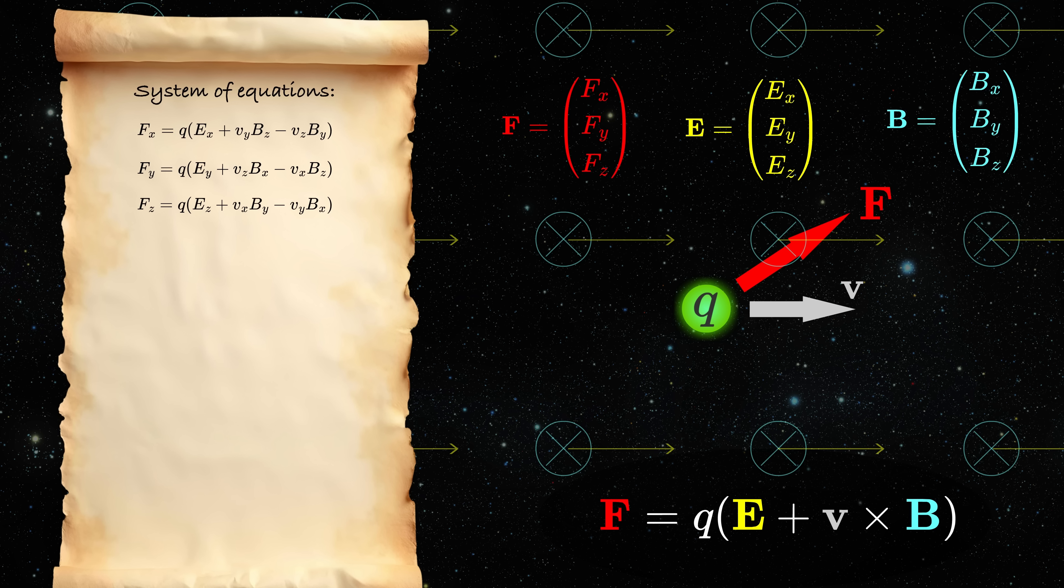And the problem is that we can only measure force. Therefore, these are the numbers we know. But we wanna figure out what are the components of the electric and magnetic fields. These are the unknowns. But as you can see, you have six unknowns, but only three equations. And as you might remember from your high school, this system is called underdetermined. This means that there are infinitely many possible combinations of electric and magnetic fields that could produce the same force.